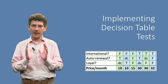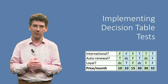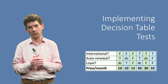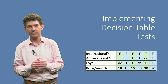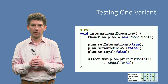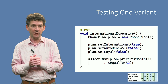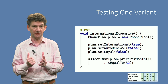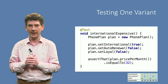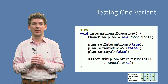To actually implement the test cases for your decision table, you can use a unit testing tool like JUnit. The simplest approach is to create one separate test method for each test case you derive. For our running phone plan example, we see one test case here.